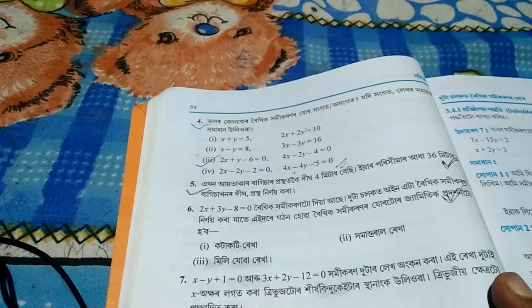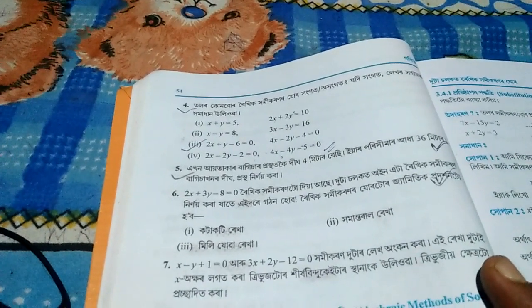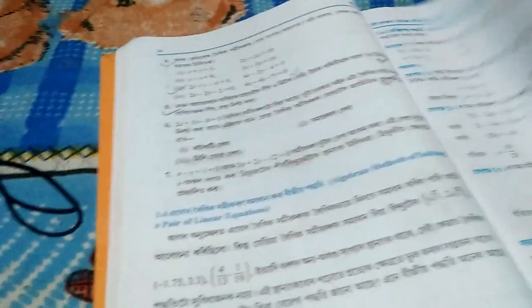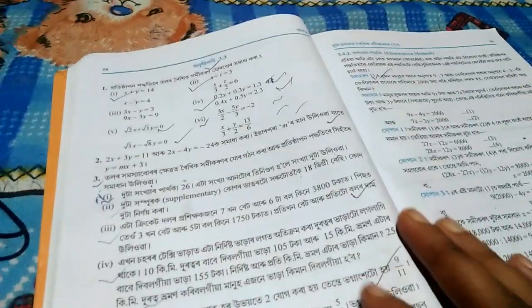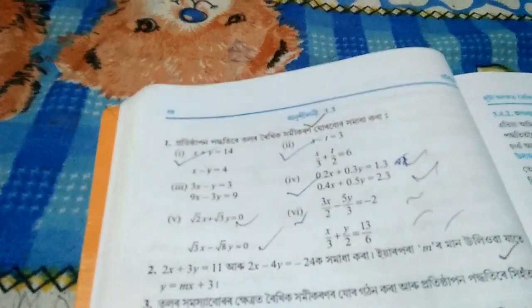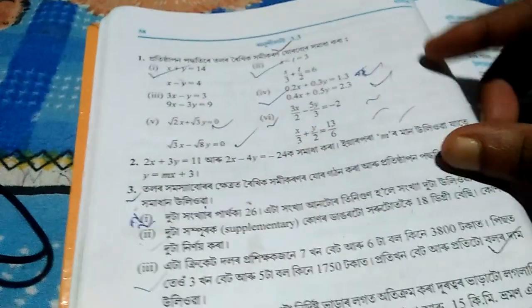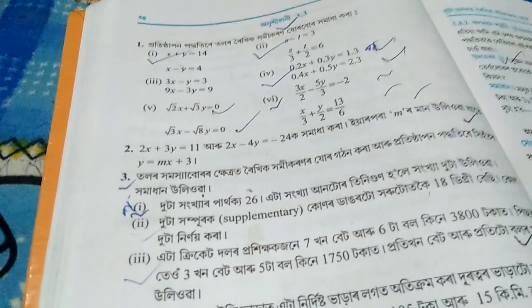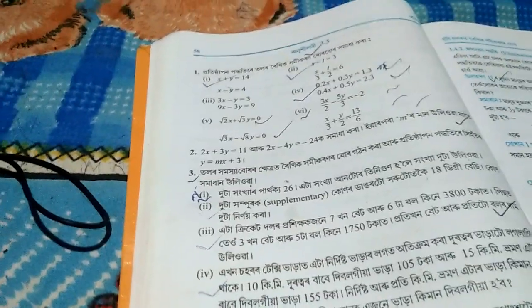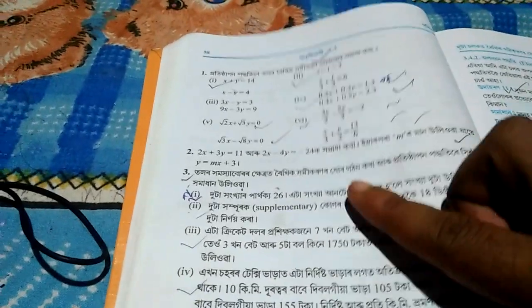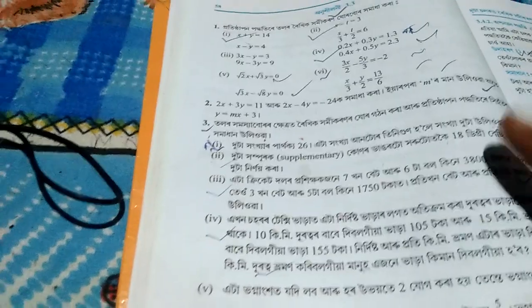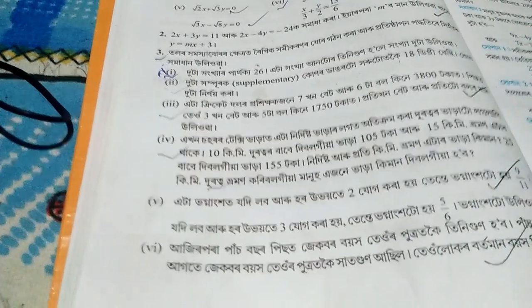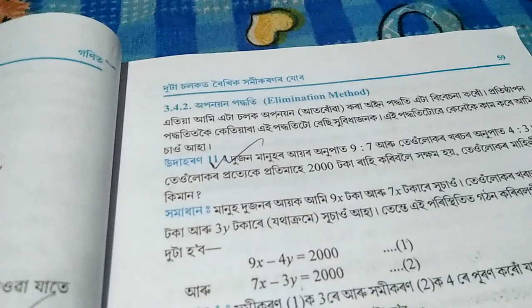Now I'll show you page number 54. The question numbers there are important. Next, page number 59 - question 3.3 is important. Then page number 61, where questions related to topic 3.3 are covered. Question number 10 there is particularly important.